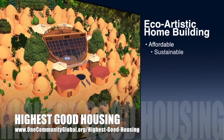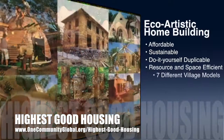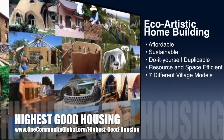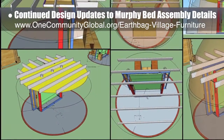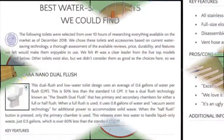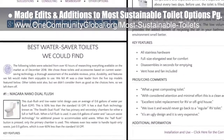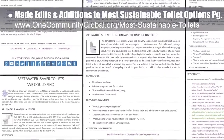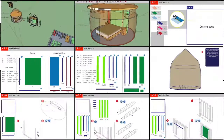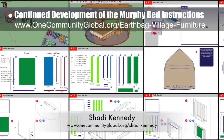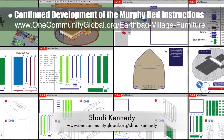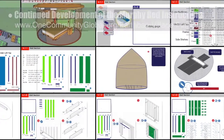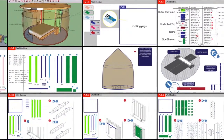One Community's approach to highest good housing is eco-artistic home building that is affordable, sustainable, do-it-yourself, duplicable, and resource-efficient, consisting of seven different sustainably constructed village models. This week the core team continued design updates to the open source murphy bed furniture assembly details — creating two different layouts for the loft joists and further improving the assembly step order. Shadi Kennedy, artist and graphic designer, also completed his 36th week leading murphy bed instruction development, creating new parts files, double-checking all measurements, and creating new instructional diagrams for the frame section.